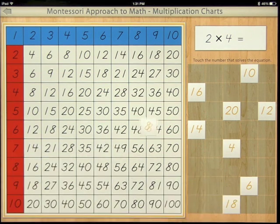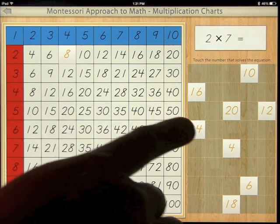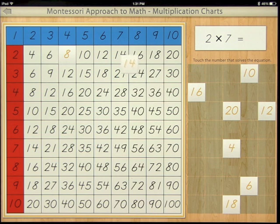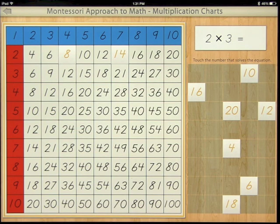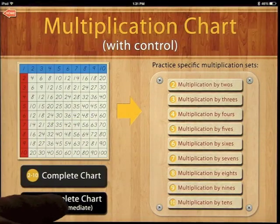2 times 7 equals 14, 2 times 3 equals, and so on. And that's the complete chart. You can also do that, like I said, on beginning or on intermediate with the complete chart.